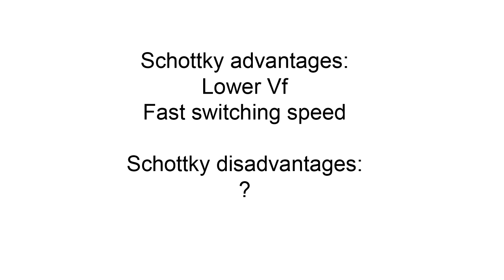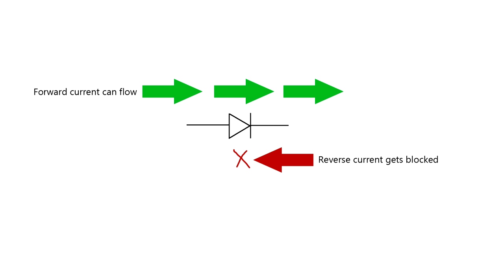So if Schottky diodes are quick and efficient, why doesn't everyone use them all the time? Why would you ever use a silicon diode? To answer that I have to talk about another property of diodes called the reverse leakage current. You know how diodes block the reverse flow of direct current? Well, that's not 100% true. There's a small leak.